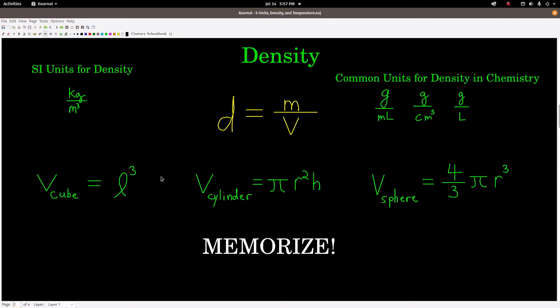It's also going to be useful for us to know the formula for the volume of a few different geometric shapes. The volume of a cube is the length of a side to the third power. The volume of a cylinder is pi times the radius squared times the height. And the volume of a sphere is four-thirds pi times the radius cubed. So memorize these volume formulas, the density formula, and the units that we use.